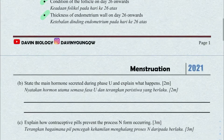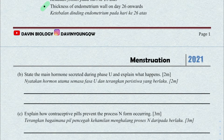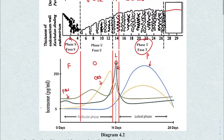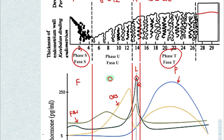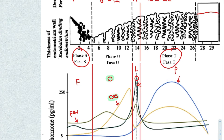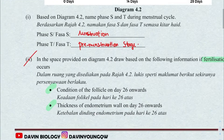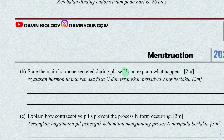The next question: state the main hormone secreted during phase U and explain what happens. Phase U is day 6 to day 12, where we have the hormone estrogen. That's the repair phase. Estrogen repairs and thickens the endometrium wall.